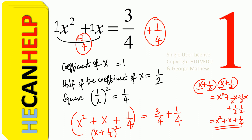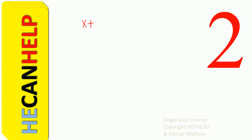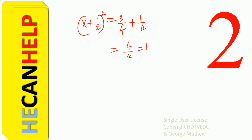When we complete the square on the left it becomes x plus 1 half, the whole squared. So we get x plus 1 half, the whole squared, is equal to 3 over 4 plus 1 over 4. 3 over 4 plus 1 over 4 is 4 over 4, and that is equal to 1. So we get x plus 1 half, the whole squared, is equal to 1.